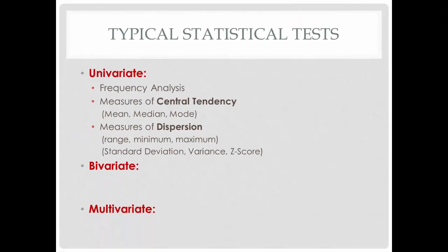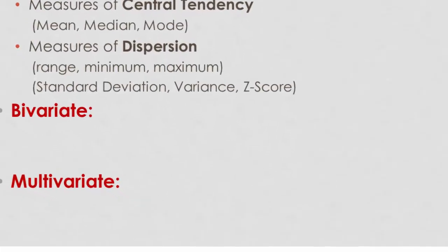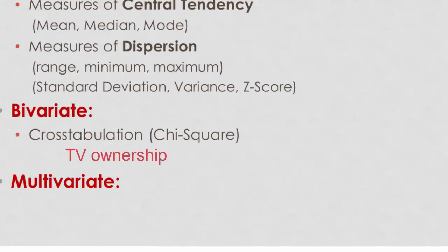Moving to bivariate statistical tests, remembering that now you're interested in the relationship between two different variables. You might conduct cross-tabulation analysis, such as chi-square, to determine if television ownership, for example, is correlated with satisfaction levels.